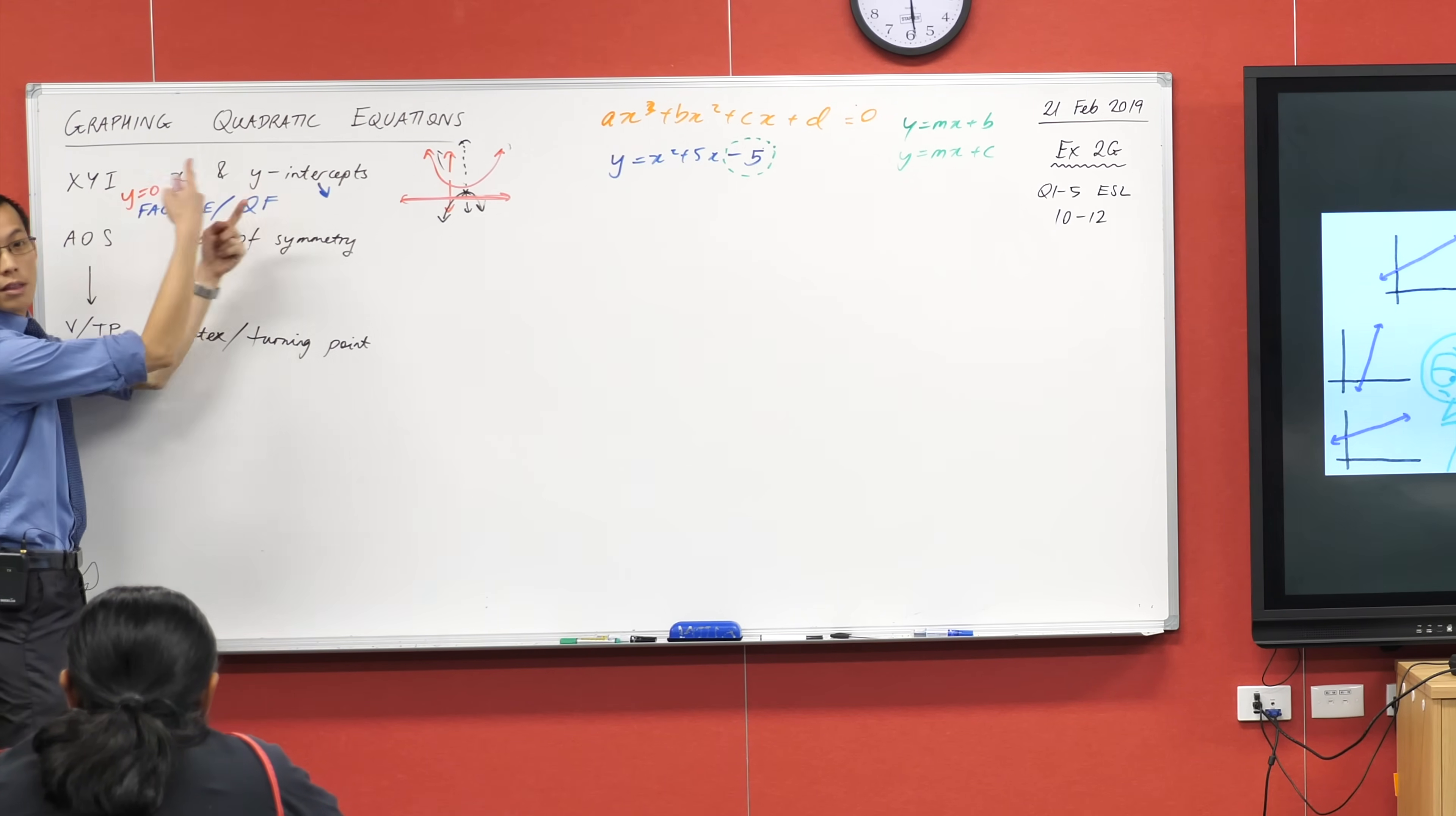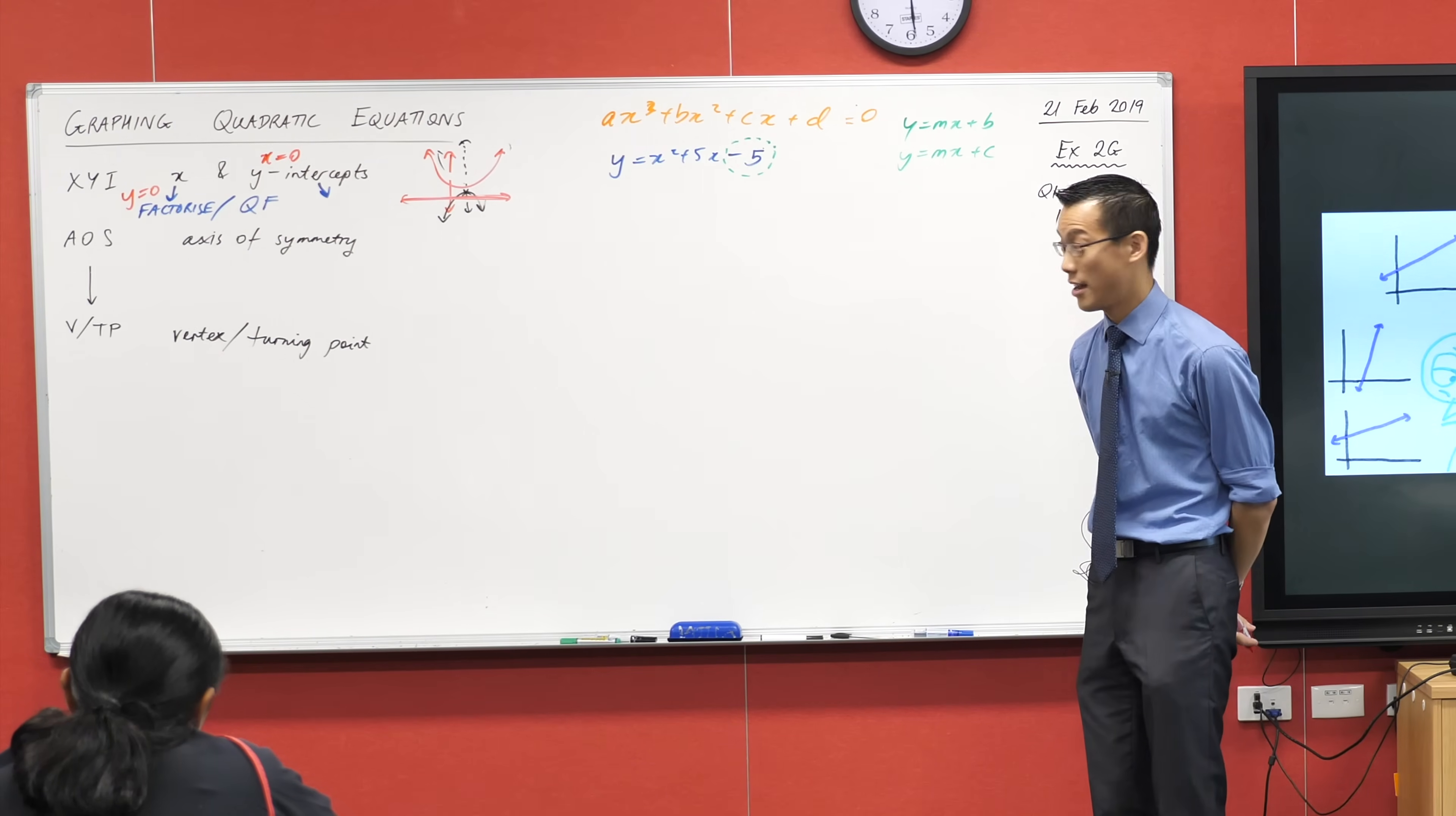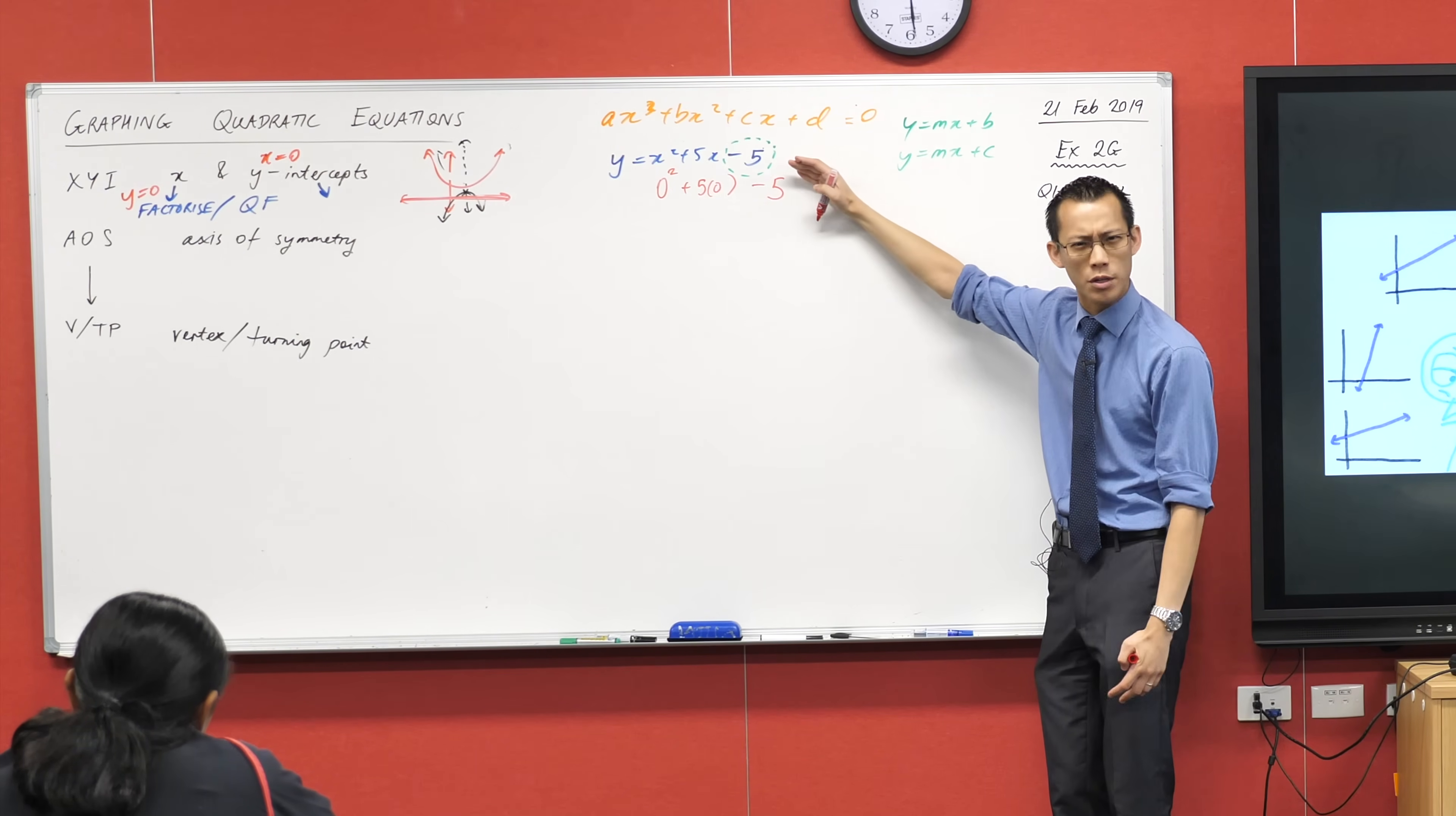But when you're looking at it from the other point of view, right, when you're finding the y-intercept, you let x equal zero. Now what happens to this equation here if x equals zero? What happens when x equals zero? Zero squared plus five lots of zero minus five. And because of what these things are, these become, they sort of can be disregarded, right? Which is why we can sort of just look at that last number, provided, of course, it's in this nice, neat form. Do you agree?